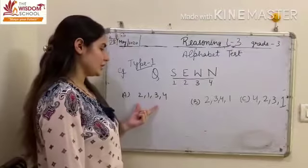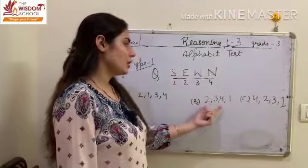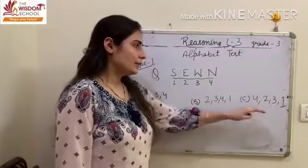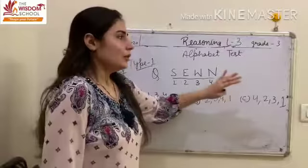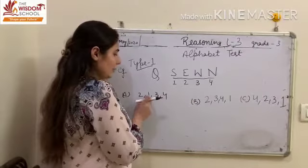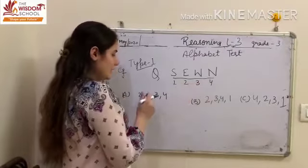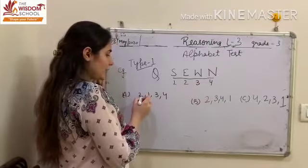You can see in option A, some numbers are given. In option B also, few numbers are given. And in option C, few numbers are given. So now what you have to do. Let us see the question.